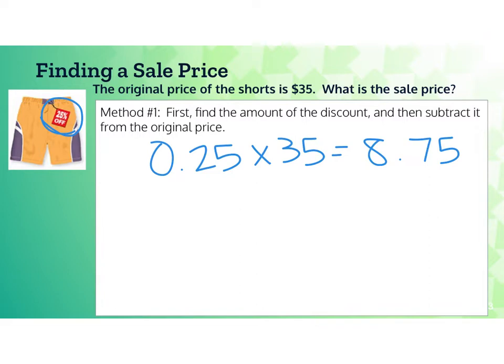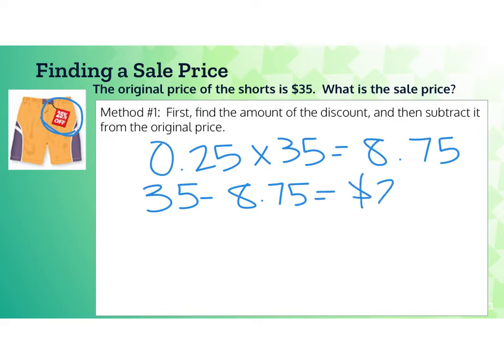That gives us $8.75. That's not what we pay for the shorts — that's the amount discounted from the original price. So in the last step, we subtract $8.75 from the original amount of $35, and that gives us $26.25 as the cost of the shorts on sale.